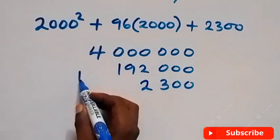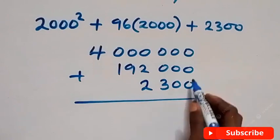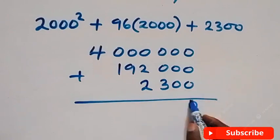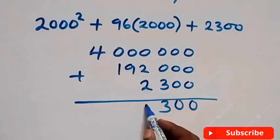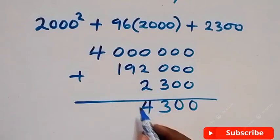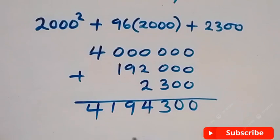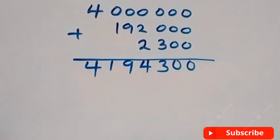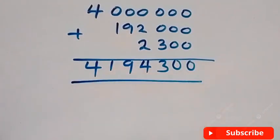So when we sum here, this becomes 4,000,000 plus 192,000 plus 2,300, which gives us 4,194,300. And here we have the final answer to the problem.